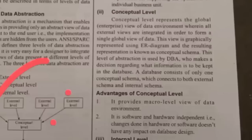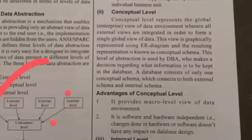The next one is Conceptual Level. Conceptual level represents the global view of the data environment across all external views. For example, in a college database, the principal as the head can view student data, faculty data, and management data. However, a student has no access to see any data except their own student data. The conceptual level is like a macro level — a big-picture view of the entire data environment.